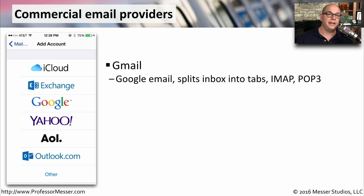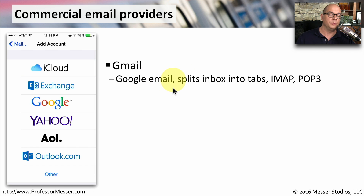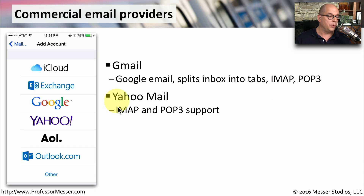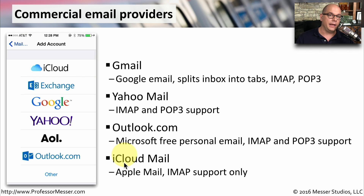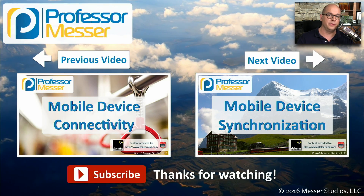Your mobile device might also natively integrate with other mail services like iCloud, Google, or Yahoo. For Google, you can receive email with your inbox split into different tabs, and it generally uses IMAP and POP3 to communicate. Yahoo Mail also supports IMAP and POP3. If you're using Outlook.com, you also have the option of using IMAP or POP3. If you're connecting to Apple's iCloud, your option for Apple Mail is IMAP support only. Regardless of which email provider you use, you'll be able to send and receive mail on the go from your mobile device.